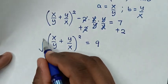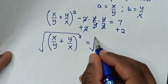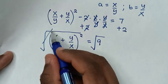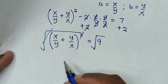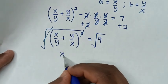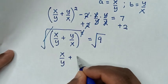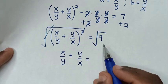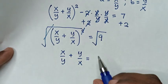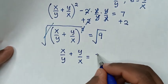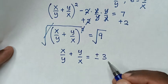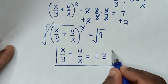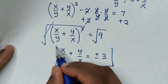In the next step, we apply square root to both sides. The square root cancels the square, so it will be x/y + y/x equals the square root of 9, which is plus or minus 3. Therefore, this is the correct answer for our problem.